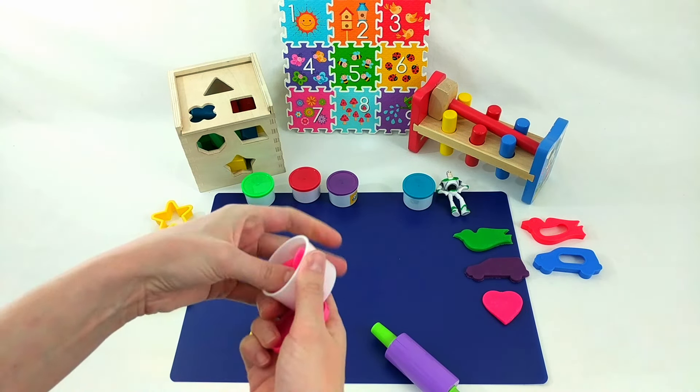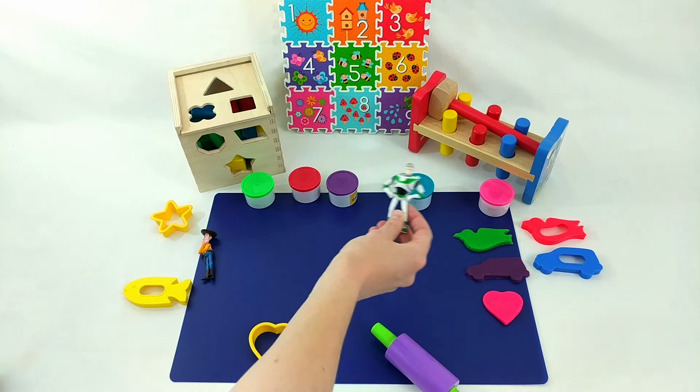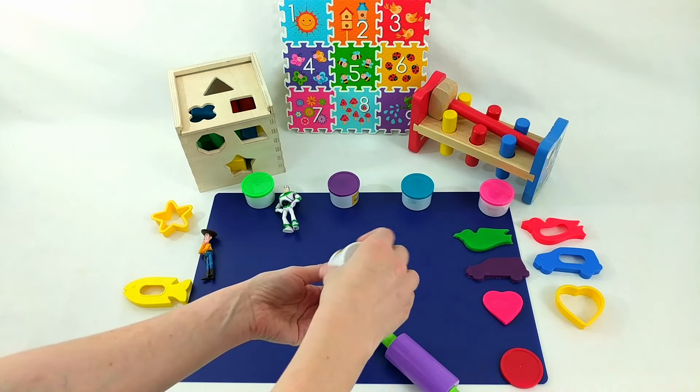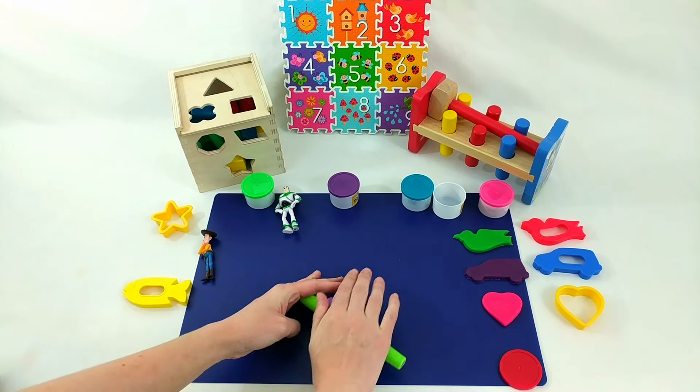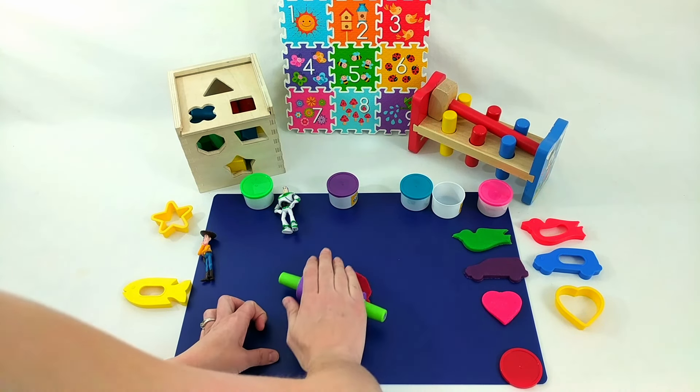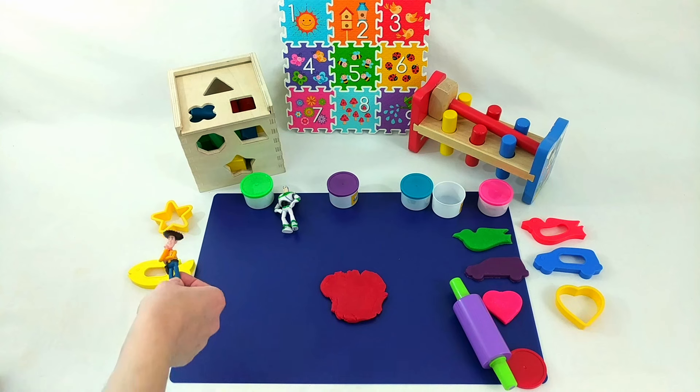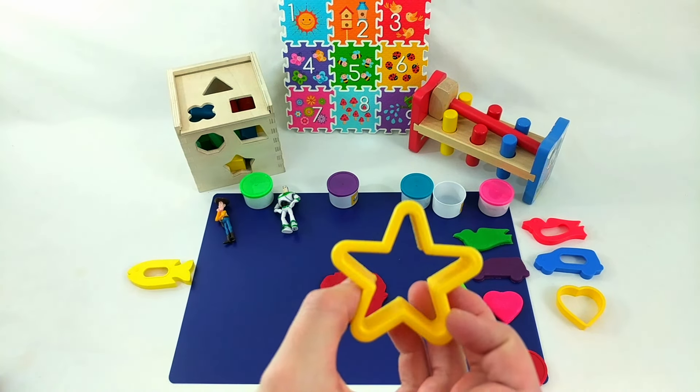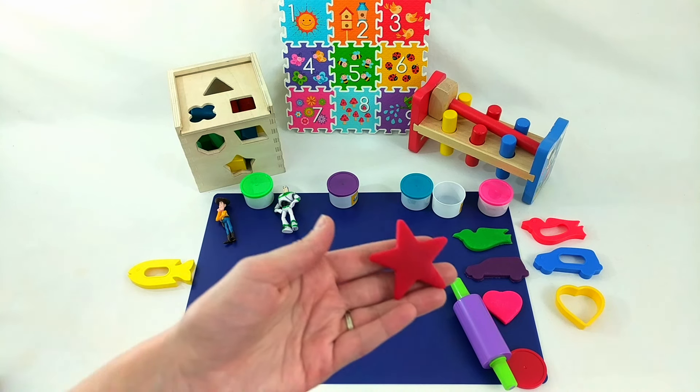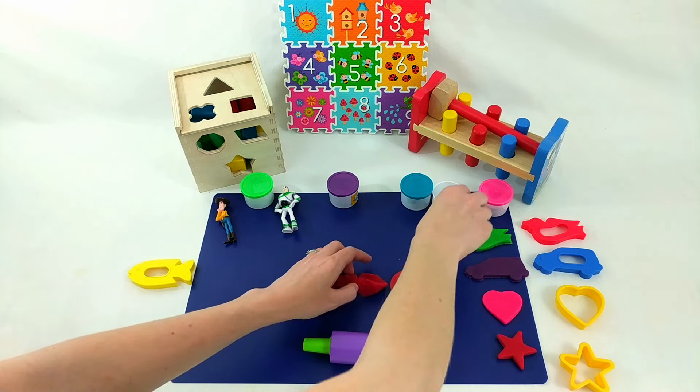Alright, great job. Okay, Buzz. Which color should we use next? Red? Okay, red. There we go. Now we're ready to make a shape. Woody, are we going to make a fish or a star with the red? Woody chose a star. Let's cut it out. A red star. We'll put it over here with our other shapes. And let's clean up the extra red Play-Doh.